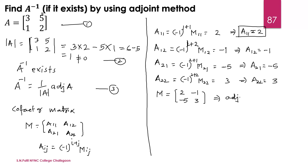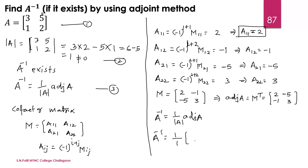Now the adjoint of A is the transpose of the cofactor matrix. We have the cofactor matrix; taking its transpose, the first row becomes the first column and the second row becomes the second column. So A inverse is equal to 1 upon the determinant — which is 1 — into adjoint of A, which is [[2, -5], [-1, 3]]. Since 1 is a scalar multiplied to every element, A inverse equals [[2, -5], [-1, 3]].